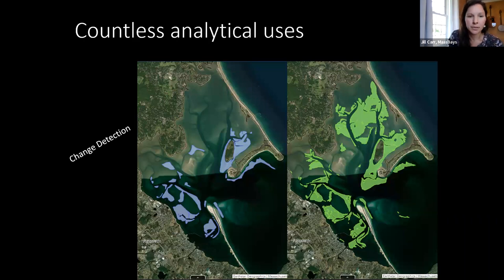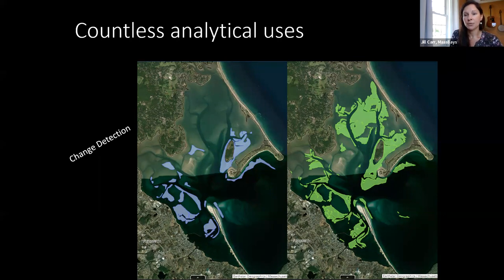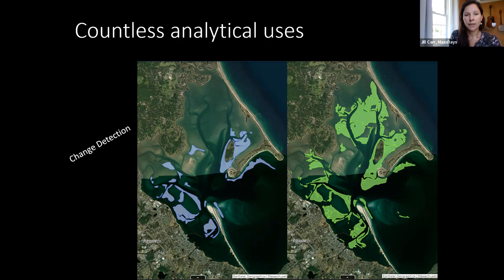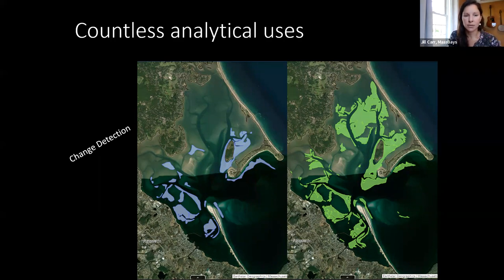There are countless analytical uses for rasters. Most relevant to our field is change detection — like DEP's eelgrass mapping program, which collects imagery every five years. Those imagery rasters are manually analyzed for eelgrass by drawing polygons on top of the rasters, like what we'll be doing for this project. There are also other change detection tools using machine learning that can draw boundaries automatically without a human, though we're not using that yet in this area and there are limitations to it.